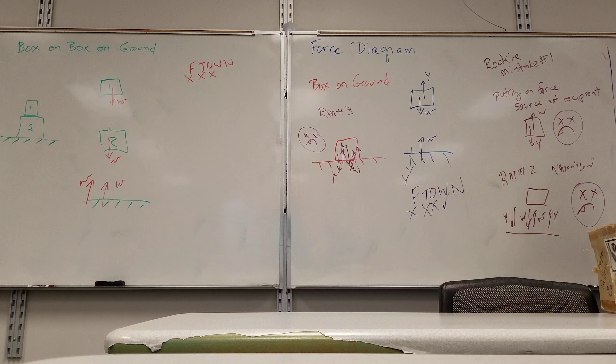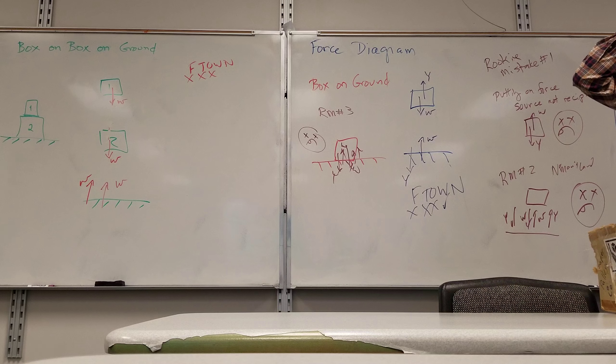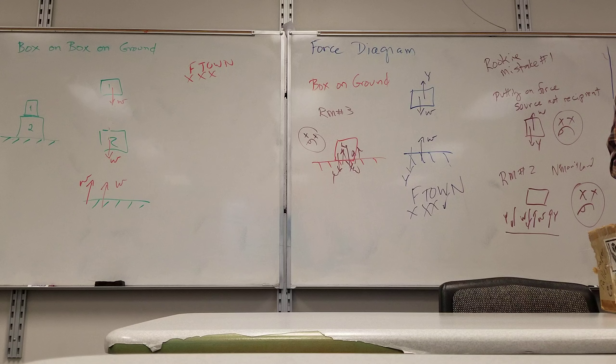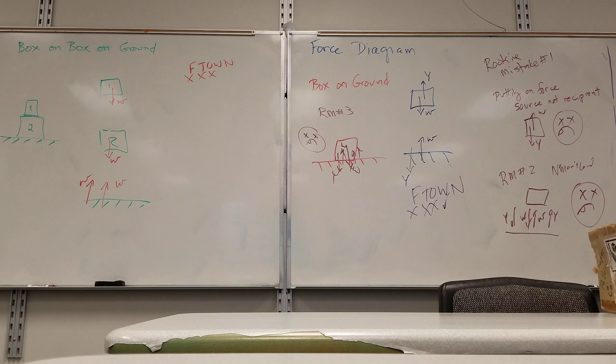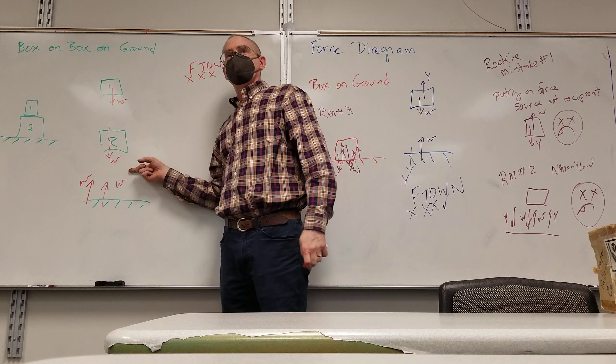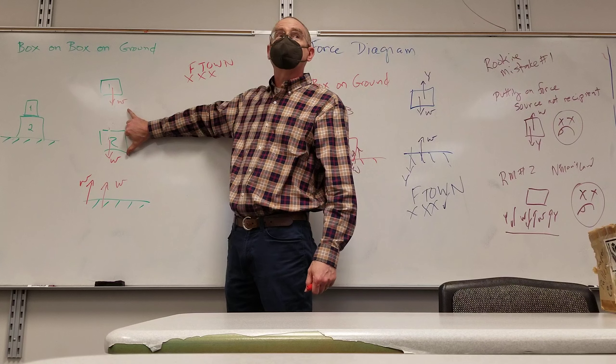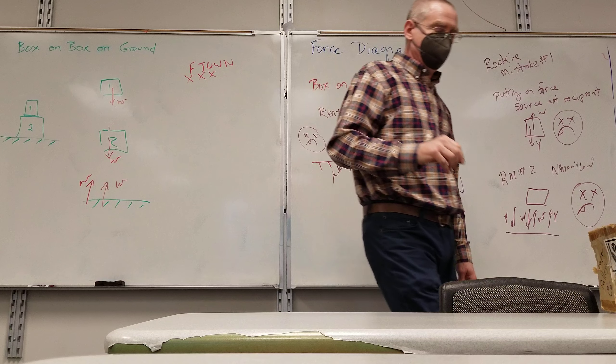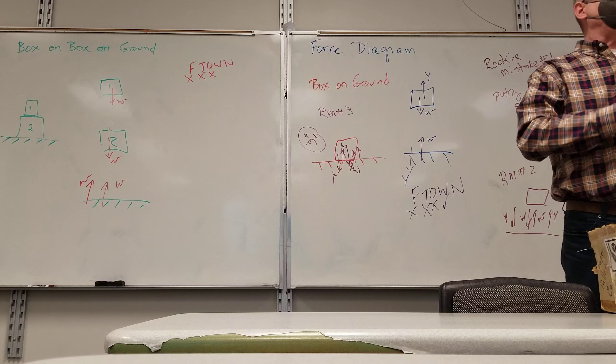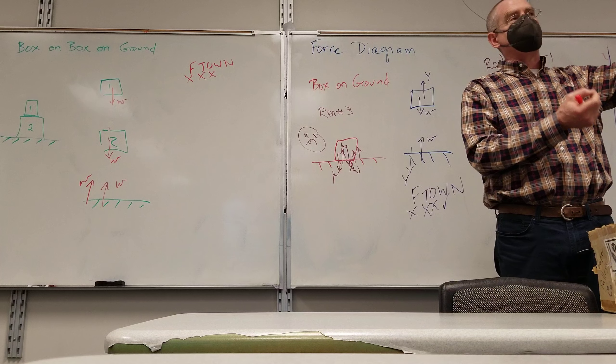Now, there's a small mistake here, rookie mistake number four. What is wrong with this picture? We have to specify whether it's box one or box two. Do box one and box two weigh the same thing? We have to somehow differentiate the Ws. If I don't differentiate them, we're saying they're the same magnitude.